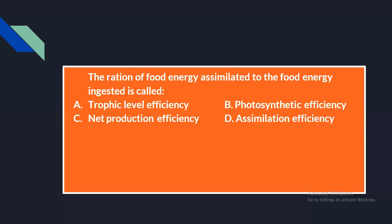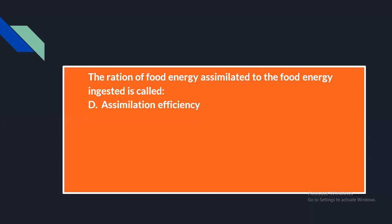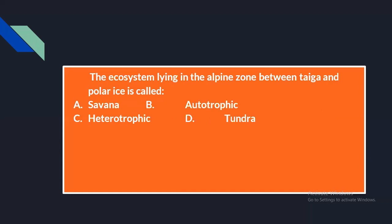The next question: the ratio of food energy assimilated to the food energy ingested is called — option A: trophic level efficiency, option B: photosynthetic efficiency, option C: net production efficiency, option D: assimilation efficiency. The answer is assimilation efficiency. The ratio of food energy assimilated to food energy ingested is known as assimilation efficiency.